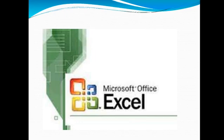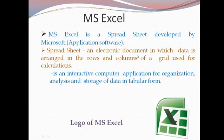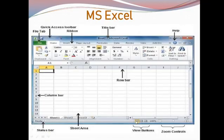The next package is Microsoft Excel. This is a spreadsheet, which is an electronic document in which data is displayed in the form of rows and columns — that grid is called the grid. This is the logo, which looks like the MS Excel icon. These are the components of MS Excel. MS Excel opens workbooks, and every book consists of different sheets. By default, it opens three sheets. This is the column bar and the row bar.